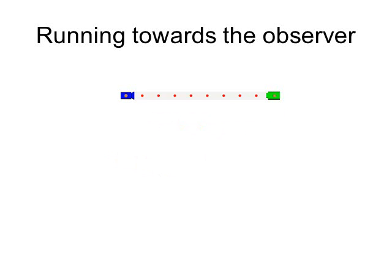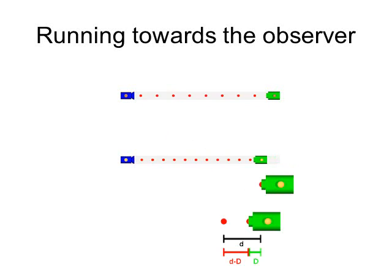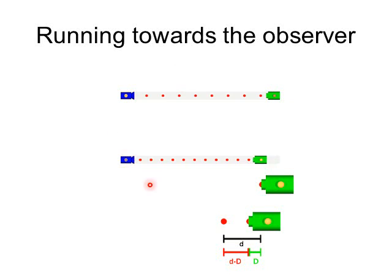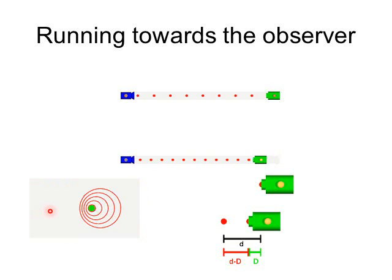Now suppose Mr. T starts running toward Ani. The observed frequency at Ani's end goes up, even though the firing frequency stays the same. This is because each successive paintball is fired from a closer position, so the distance between paintballs is smaller and they hit more often. This is similar to a sound wave from a moving source — the waves in front are compressed closer together, so they hit more often and the frequency appears higher.